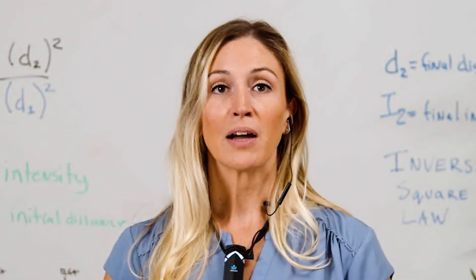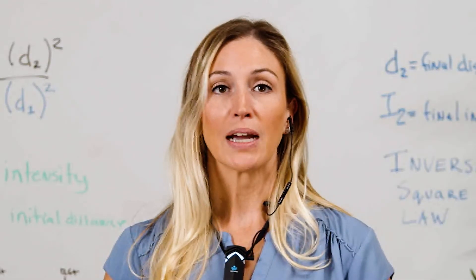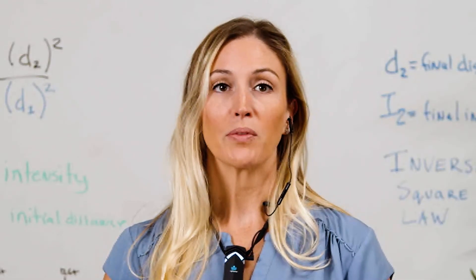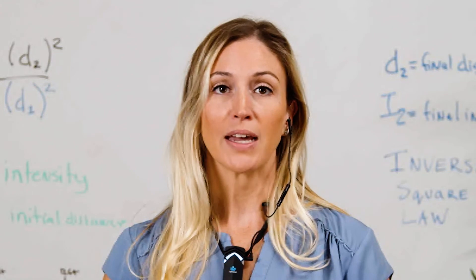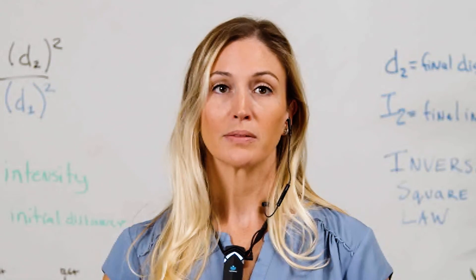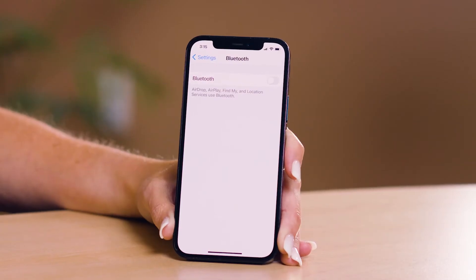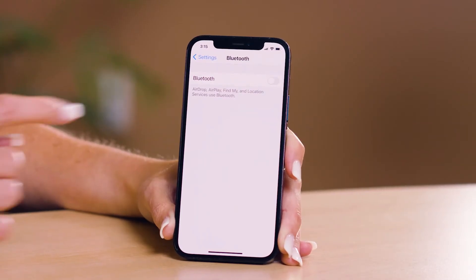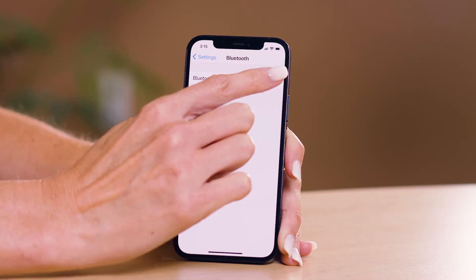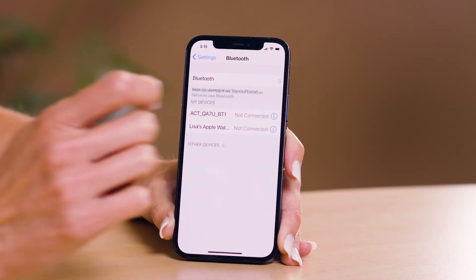First, download the Lightspeed Activate mobile app from your device's app store. Make sure that Bluetooth is turned on in your device and open the Activate app.